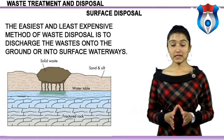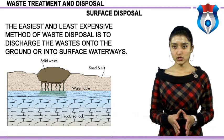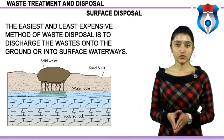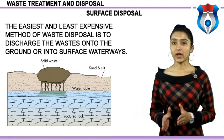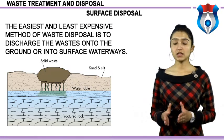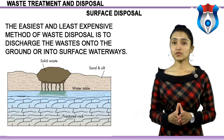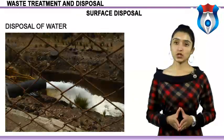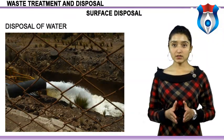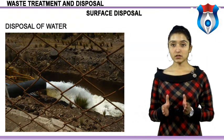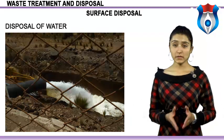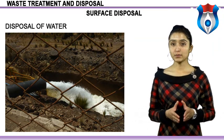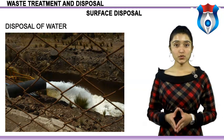Surface disposal: the easiest and least expensive method of waste disposal is to discharge wastes onto the ground or into surface waterways. Although this has historically been a common disposal method, its use and misuse has been a major factor in the increase in environmental regulations governing the petroleum industry. Nevertheless, various forms of surface disposal are still appropriate for many treated wastes. Disposal of water: wastewater can be discharged directly into local streams, rivers, or the ocean as long as its quality meets regulatory standards — that is, its concentration of suspended and dissolved solids, chemicals, and hydrocarbons is sufficiently low. Surface discharge is regulated in most areas, and permits are required.